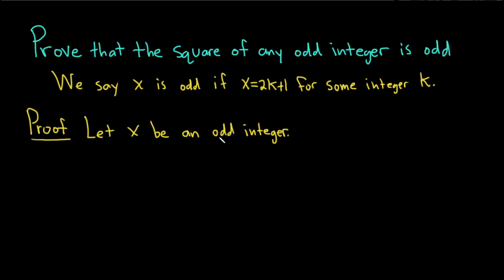So further, explain what it means for x to be an odd integer. This means we'll simply use the definition of odd: x equals 2k plus 1 for some integer k.